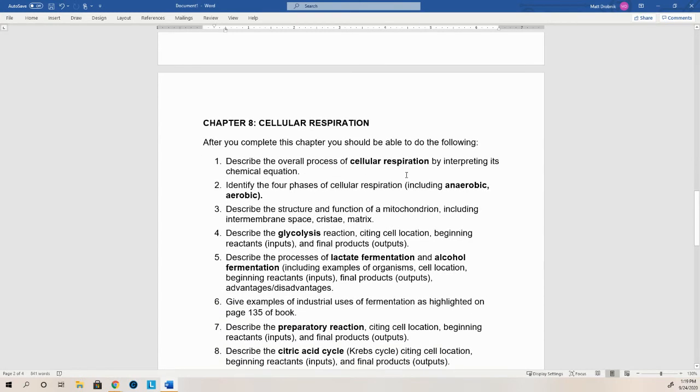So we should know our four phases of cellular respiration. Glycolysis is the first one. It takes place in the cytoplasm and is anaerobic. Then if oxygen's present, we can move into the mitochondria for the prep reaction, the Krebs cycle, and the electron transport chain. Those are considered the aerobic portions.